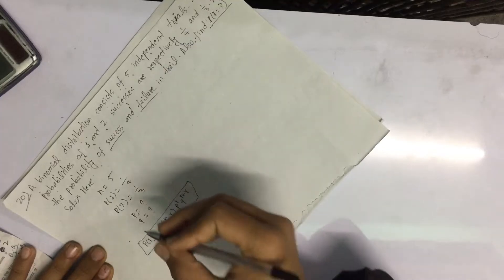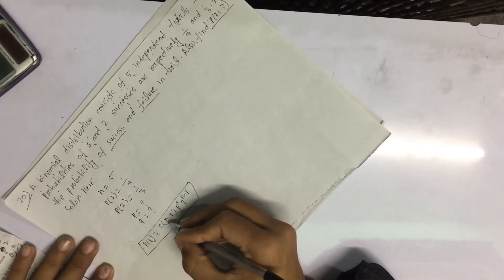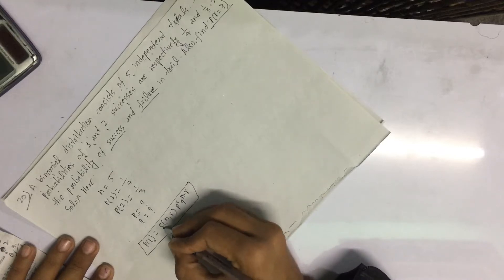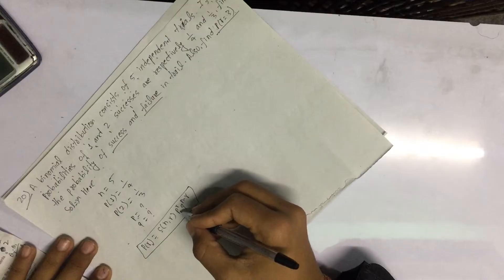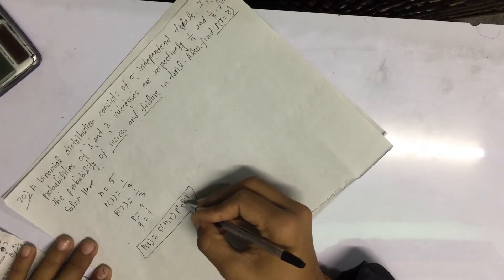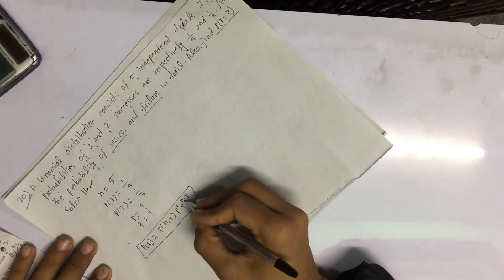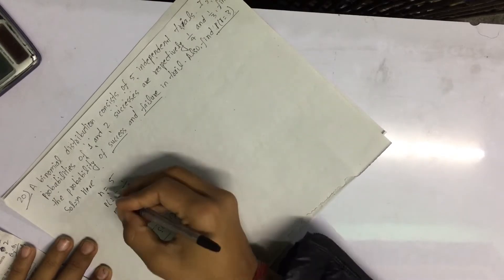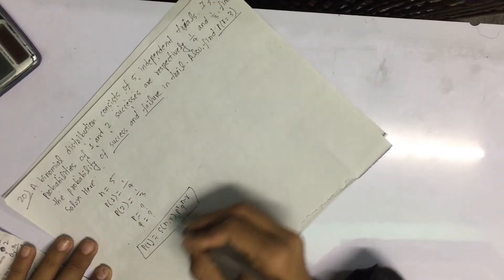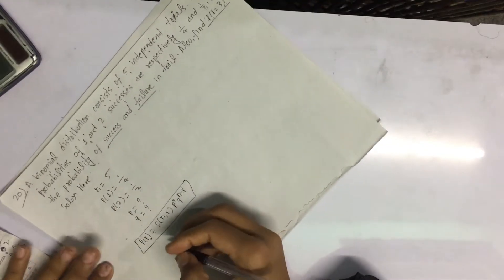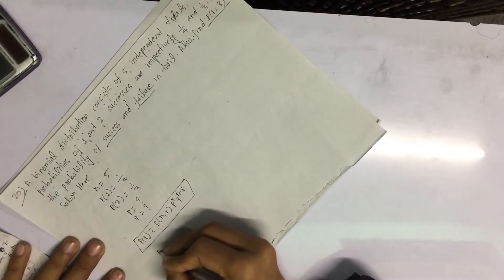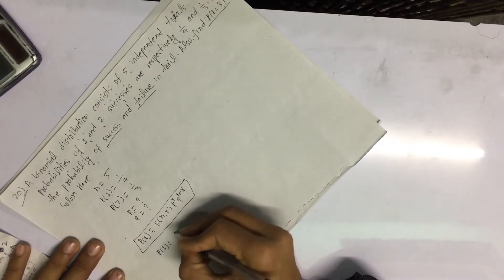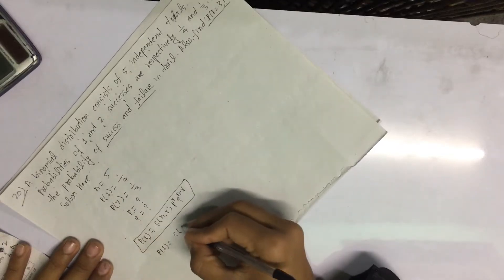The binomial formula is: probability of r is equal to combination of n, r into p to the power r into q to the power n minus r. Here n is the number of trials, p is probability of success, q is probability of failure.